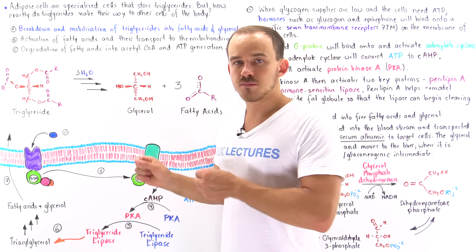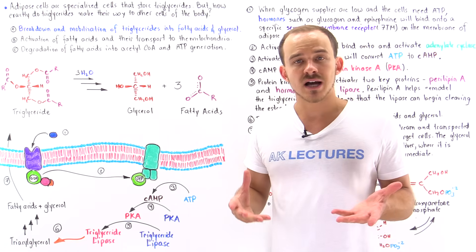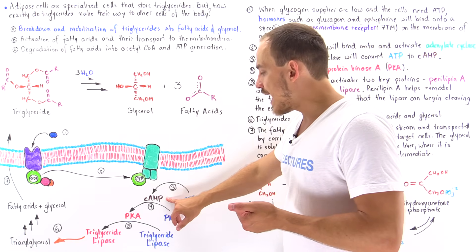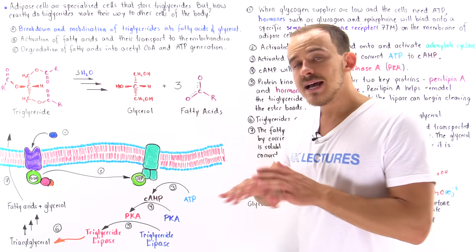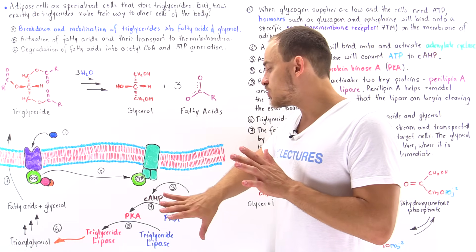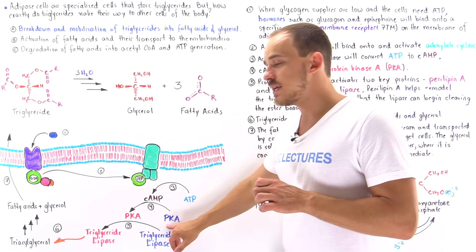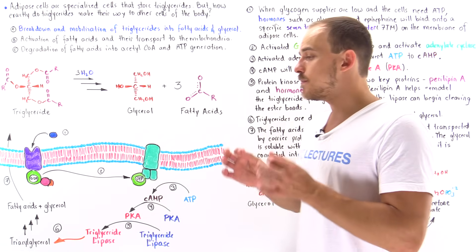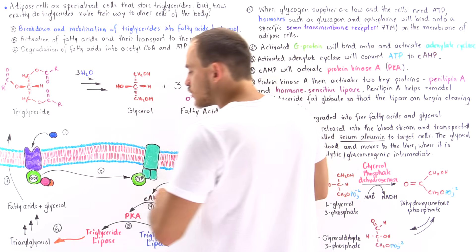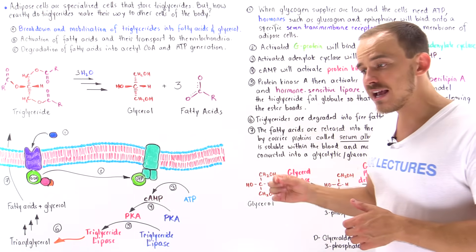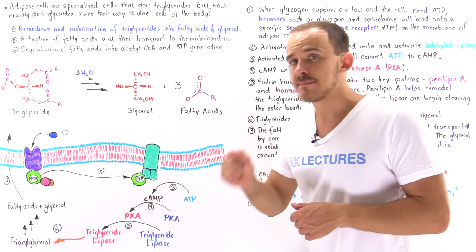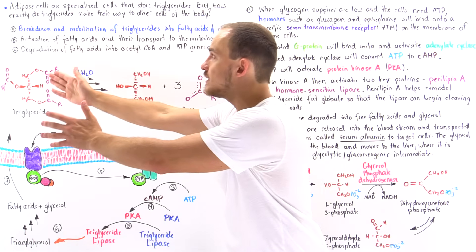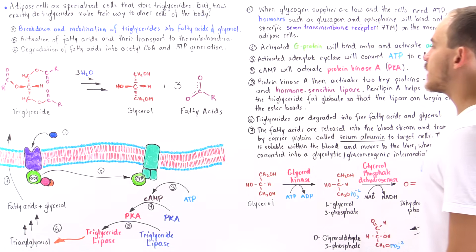The cyclic AMP is the secondary messenger in this particular signal transduction pathway. The cyclic AMP molecules then move on to target proteins, PKA molecules - protein kinase A. Cyclic AMP binds onto the regulatory units of the PKA, causing the dissociation of the catalytic units from the PKA, and that activates the PKA. Once the PKA is activated, protein kinase A goes on to phosphorylate and activate two important types of enzymes involved in the breakdown and mobilization of triglycerides.